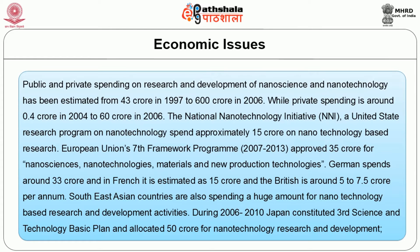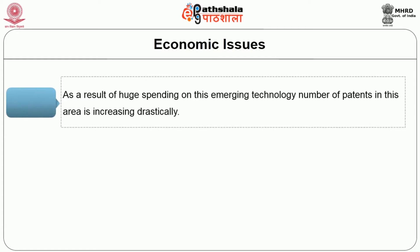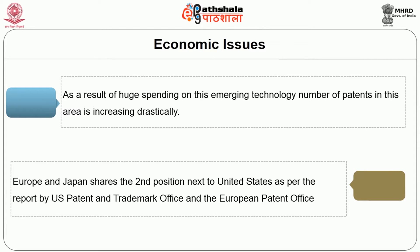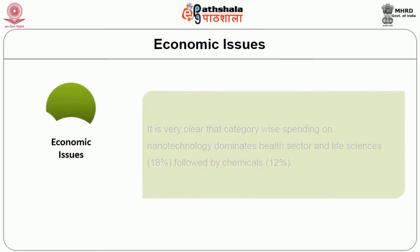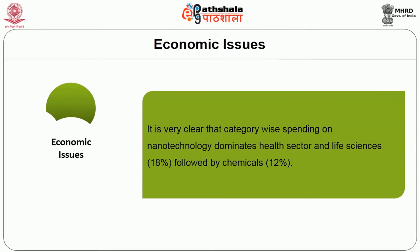Southeast Asian countries are also spending a huge amount on nanotechnology-based research and development activities. During 2006 to 2010, Japan constituted a committee called the Third Science and Technology Basic Plan and allocated 50 crore for technology research and development. As a result of huge spending on this emerging technology, the number of patents in this area is increasing drastically. Europe and Japan share the second position next to the United States as per the report by the US Patent and Trademark Office and the European Patent Office. From the figure, it is clear that category-wise spending on nanotechnology is dominated by the health sector and life sciences at around 18%, followed by chemical industries at around 12%.